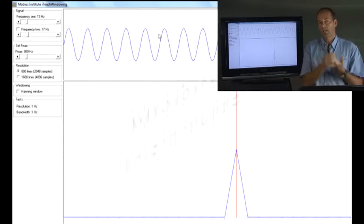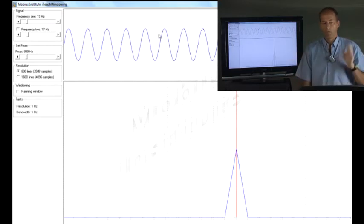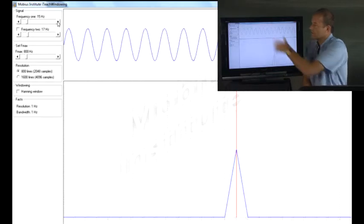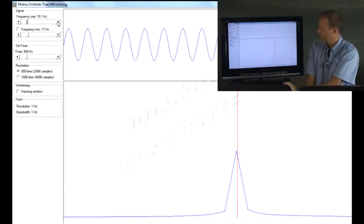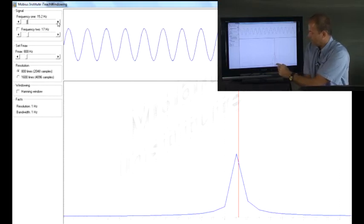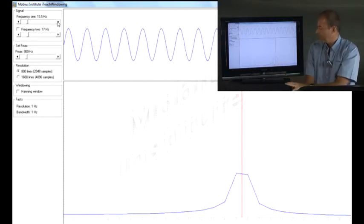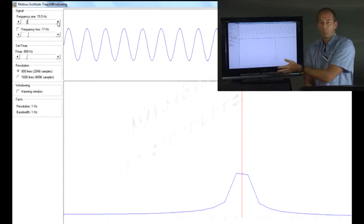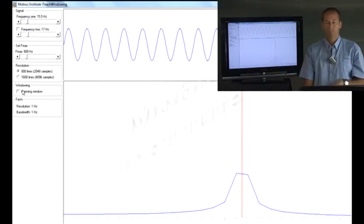800 lines, 800 hertz, that means there's one hertz between each bin. But what happens if the machine generates vibration that isn't exactly 15? What if it's 15.1 or 15.2? The red line is showing the exact frequency, but the spectrum can only give me a value at 14, at 15 and 16. And what we get is a real mess. Now, what I'm going to do, that's called leakage.